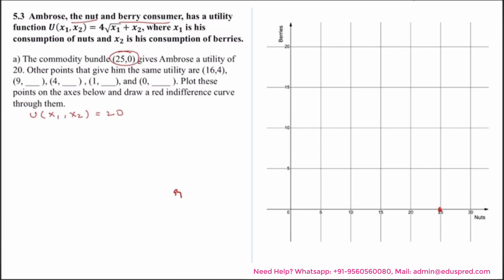Another point that gave him the same utility is (16, 4). So that would be somewhere here. Now for Ambrose, if he wants to have the utility of 20 and his utility function is taking the form of 4 square root of x1 plus x2, and we want that the value of this utility should be equal to 20, the first consumption bundle the question is asking us is (9, dash).